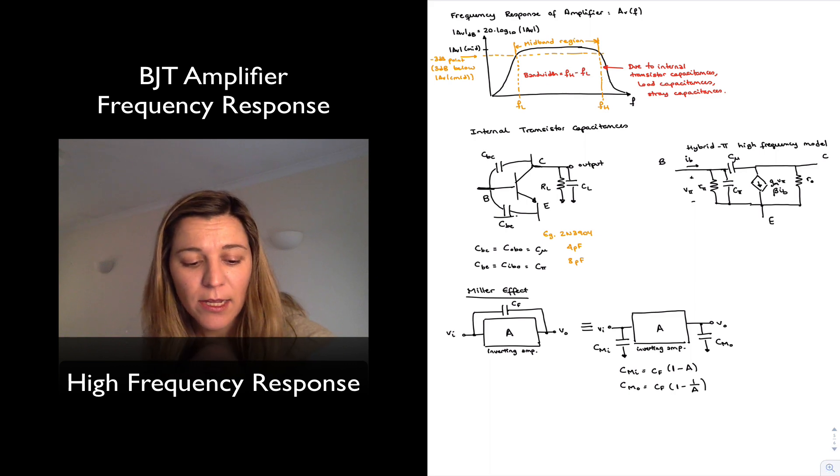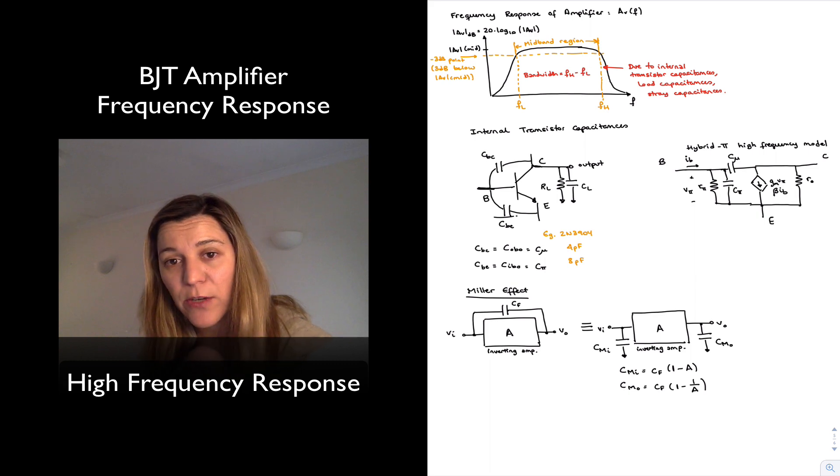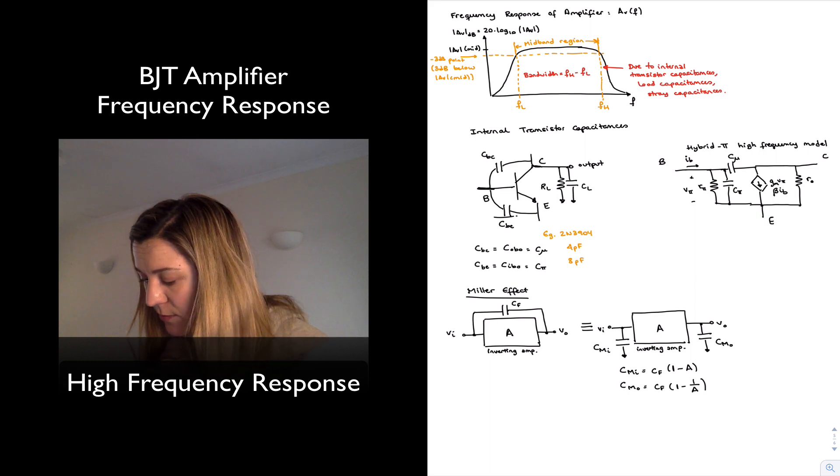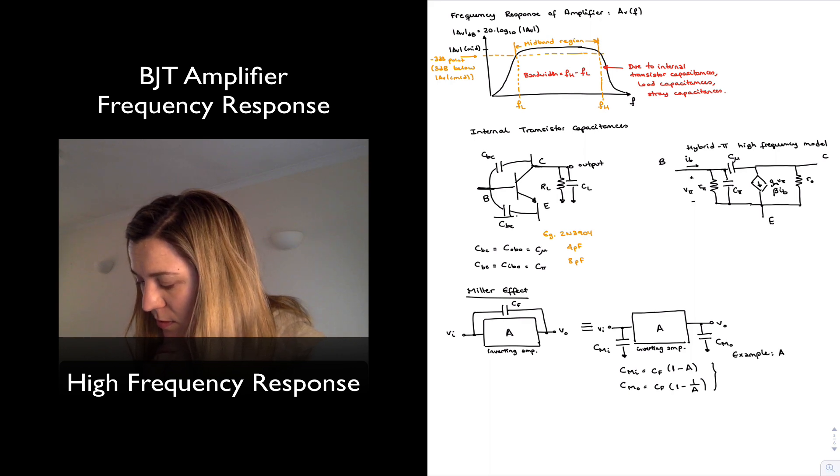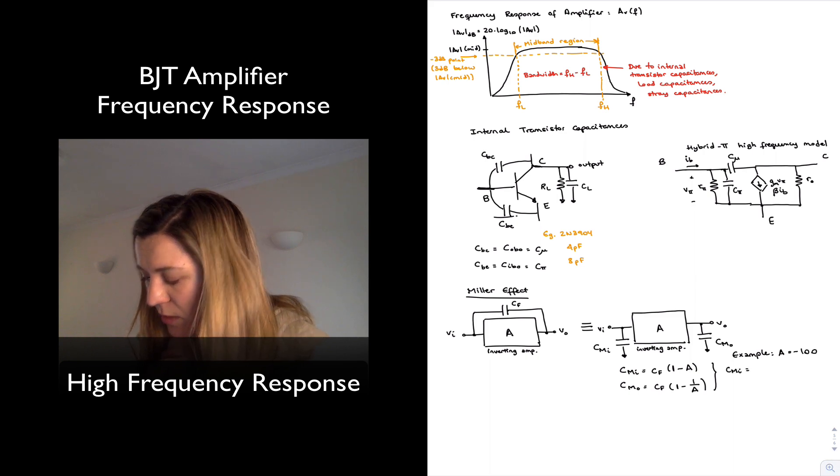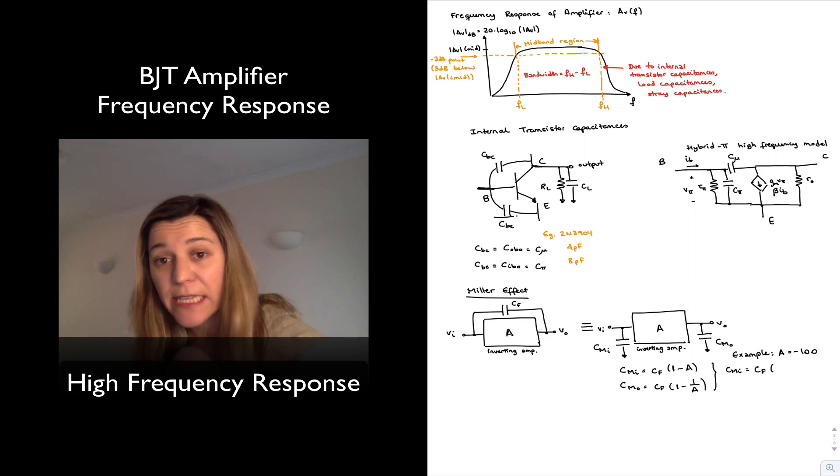So for example, let's say that the gain of my amplifier was negative 100. A equals negative 100. What I will see is that my Cmiller input will be equal to Cf multiplied times 1 minus negative 100...